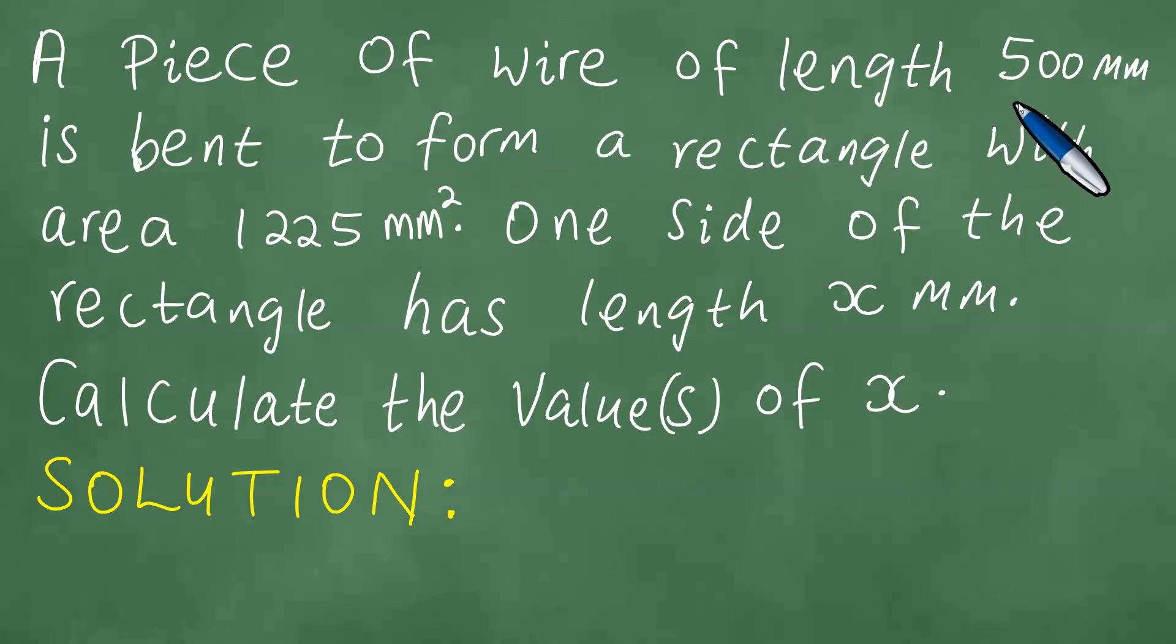A piece of wire of length 500 mm is bent to form a rectangle with area 1225 mm². One side of the rectangle has length x mm.